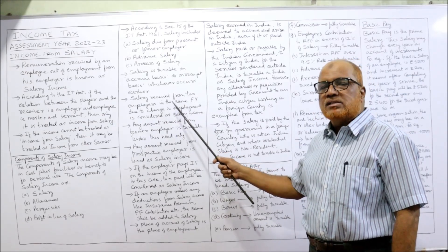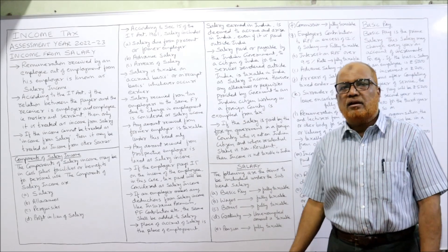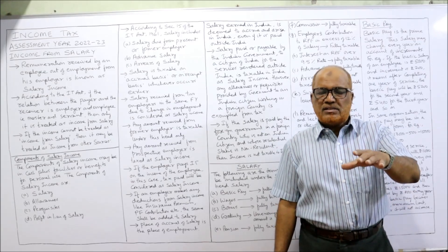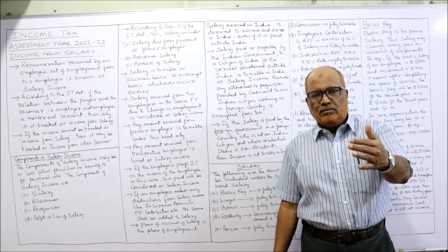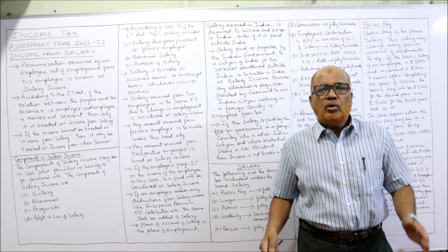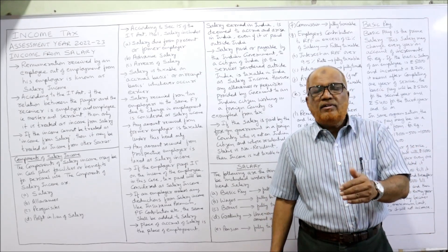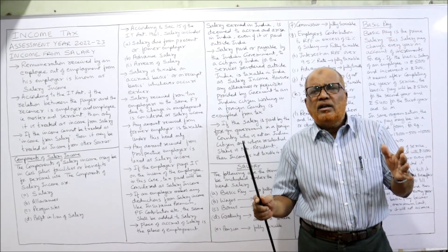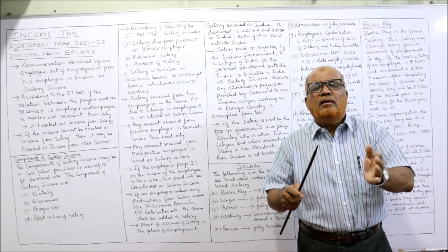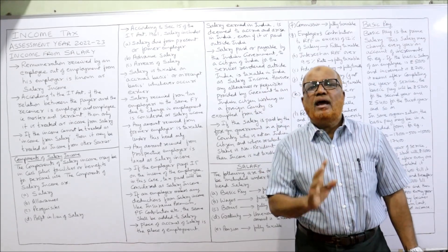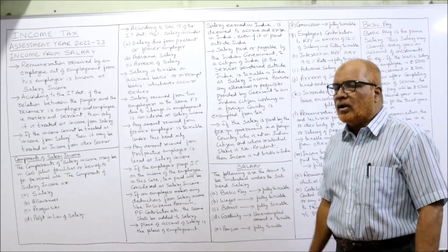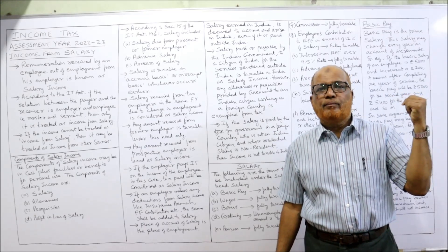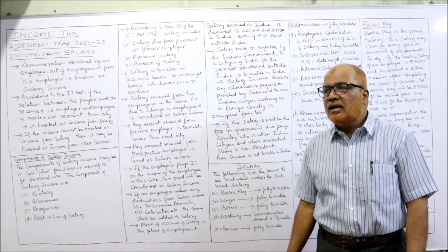Salary received from 2 employers in the same financial year due to change in employment is considered as salary income. For example, the first 6 months the employee was working in ABC Limited, and the next 6 months in XYZ Limited. The Income Tax Act says we will not compute income from salary separately — we will combine the total salary received from both employers. Also, any amount received from a former employer is also taxable under this head.